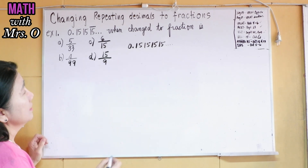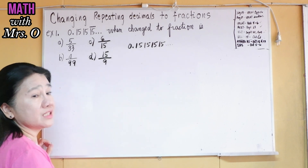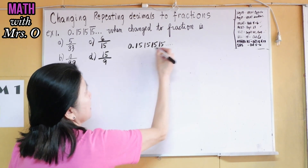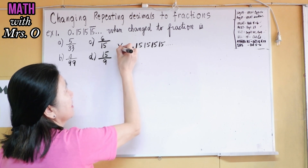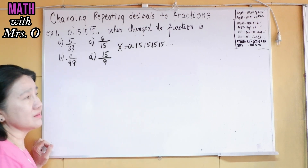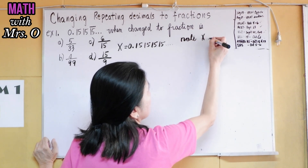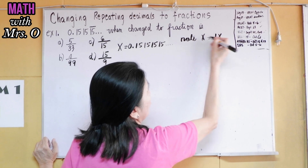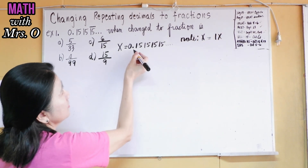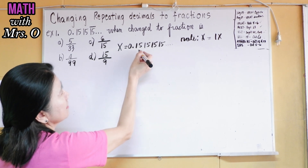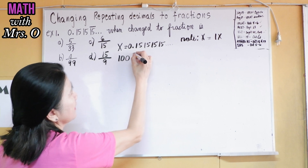So what do we do? We have to remove the repeating decimals. You let this be x — this is going to be your x. Note that x means 1x. To remove the repeating decimal, you multiply this by 100x.